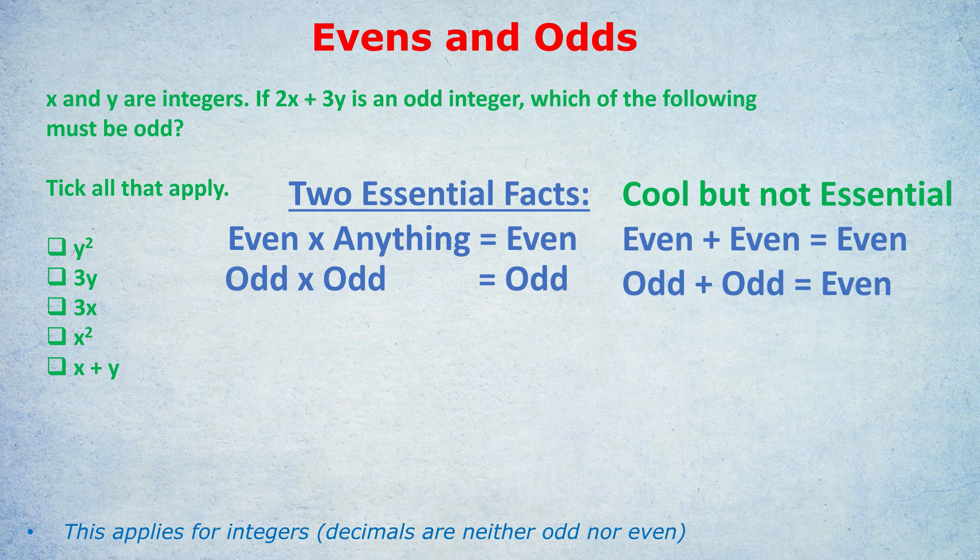Starting with the 2X. What will 2 times X be in terms of even or odd, where X is some integer? It will be even, because the first rule is that an even times anything is even, and 2 is of course an even number. So 2X, that part of the expression, is definitely even.